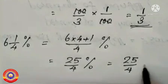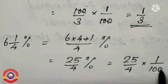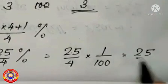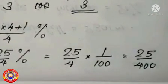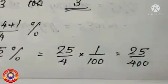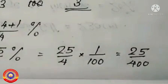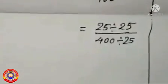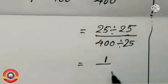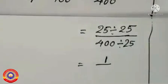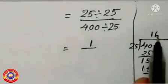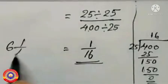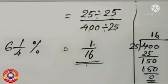Now for finding out the fractional form of 25 by 4 percentage, multiply 25 by 4 into 1 by 100. 25 into 1 is equal to 25, and 4 into 100 is equal to 400, that is equal to 25 by 400. We have to find out the lowest form of 25 by 400. 25 and 400 are divisible by 25. Therefore 25 divided by 25 is equal to 1, and 400 divided by 25 is equal to 16. Therefore 6 and 1 by 4 percentage is equal to 1 by 16.